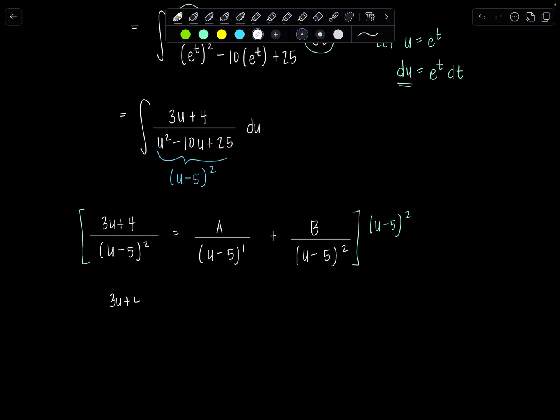So 3u plus 4 equals A times u minus 5 plus B. Perfect. So 3u plus 4 equals—I'm just going to multiply everything out—Au minus 5A plus B.